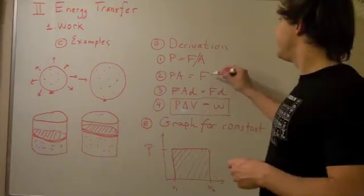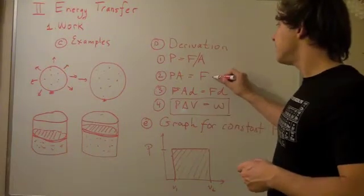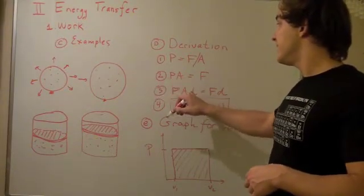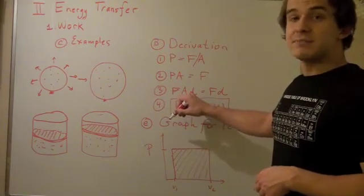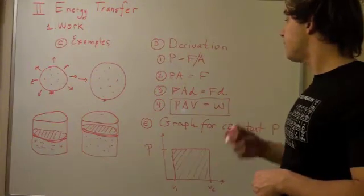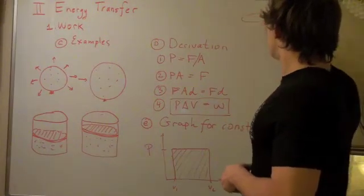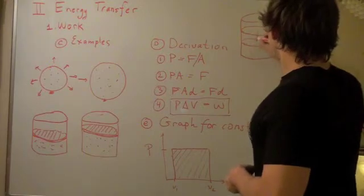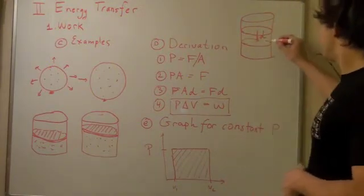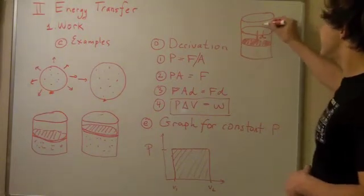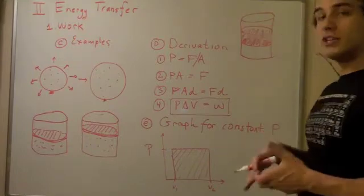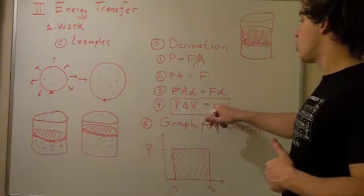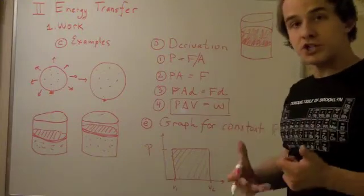What happens if we multiply both sides by distance? If you multiply this side by distance, we get force times distance. If you multiply this side by distance, we get pressure times area times distance. But remember, area times distance is simply the volume. If we go back to our piston example, and the piston moves a certain distance D, then this area A times distance D will give us this whole volume or the change in volume. Therefore, pressure times change in volume is equal to work. That's how we derive this equation from pressure.